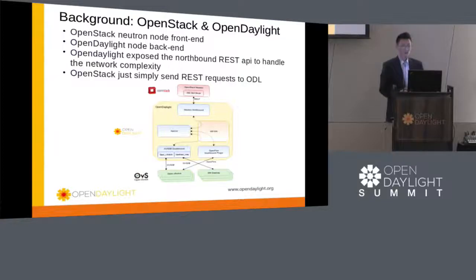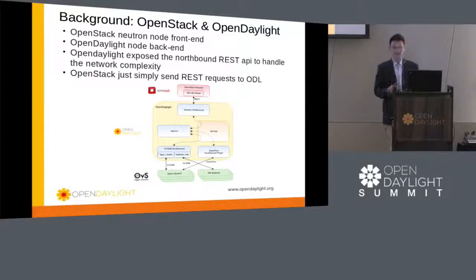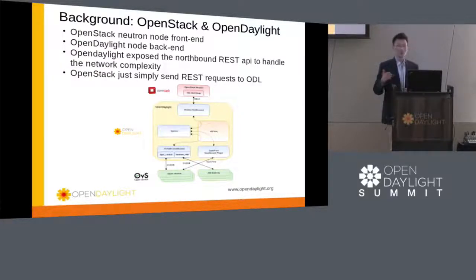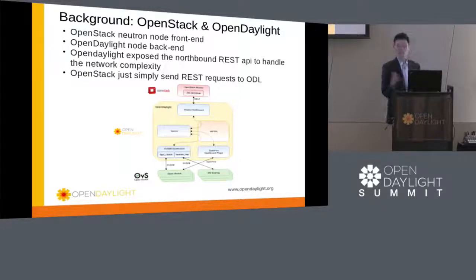The background: OpenStack is working in the front end, and OpenDaylight is working on the back end. OpenDaylight exposes the northbound REST API to handle the network complexity that moves from the neutron services. OpenStack simply sends a REST request to OpenDaylight — that's the big picture.